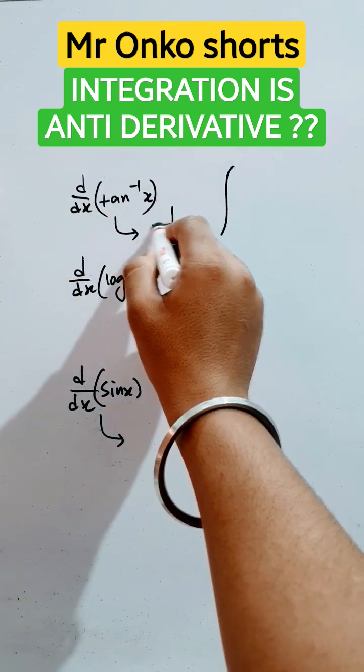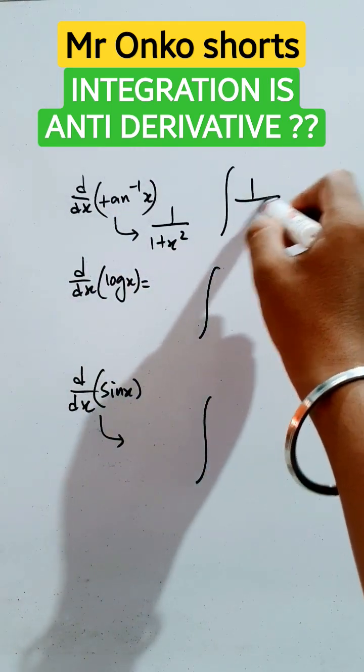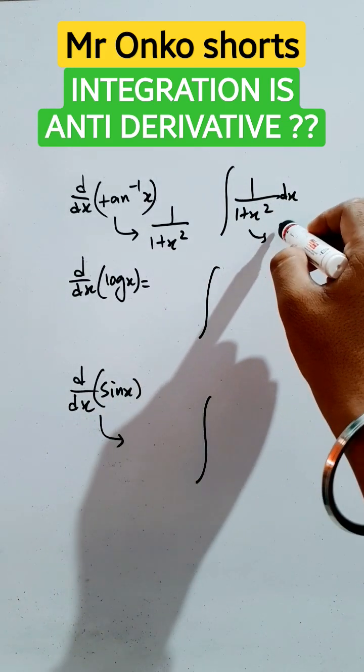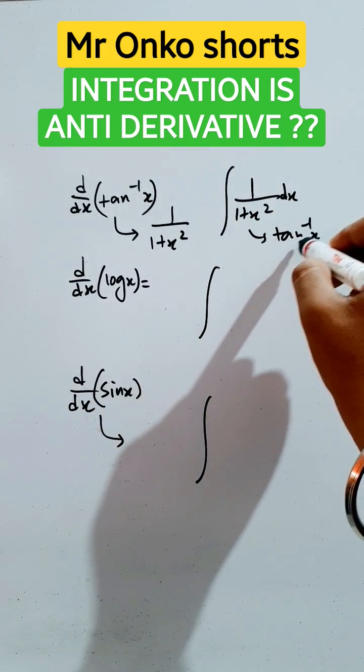The derivative of tan inverse x is 1 by 1 plus x square. Now, if integration of 1 by 1 plus x square dx is provided, the answer will be tan inverse x plus c.